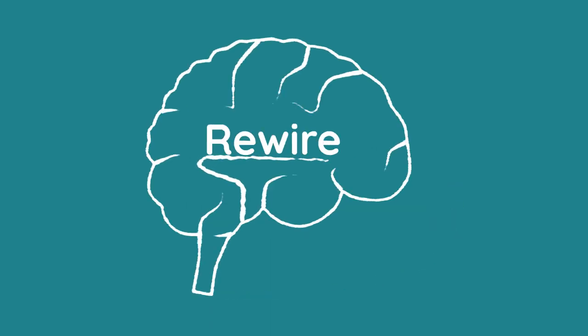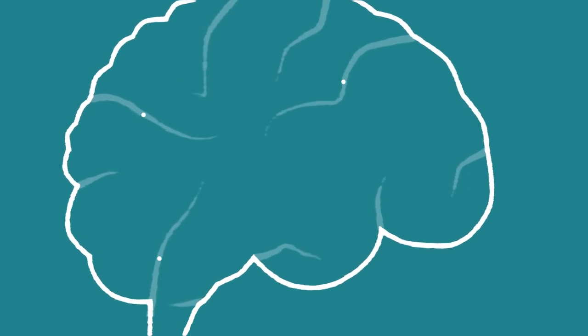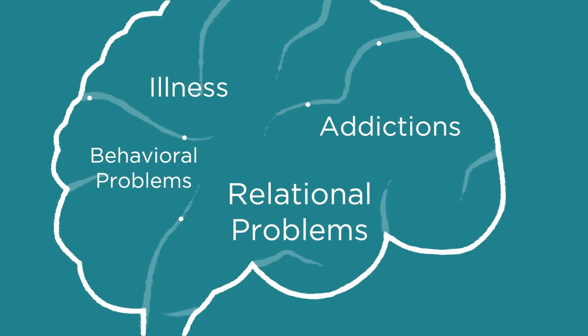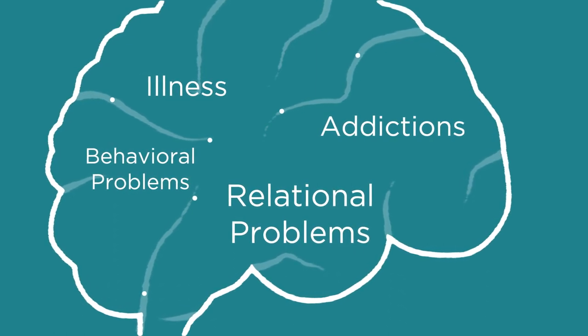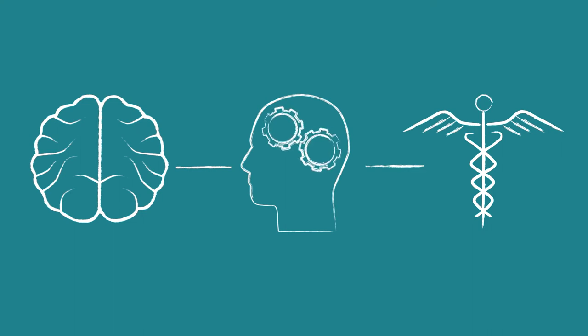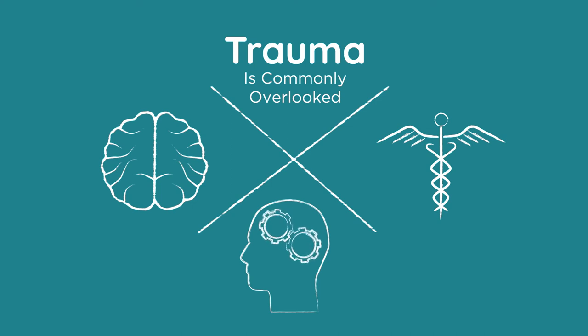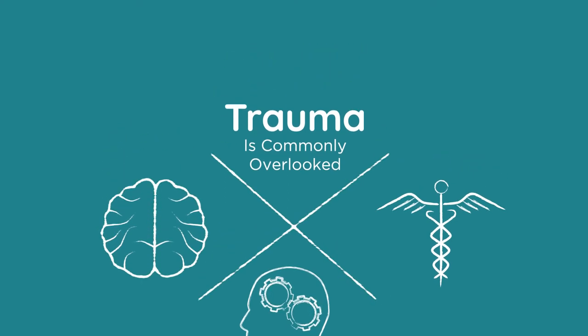Trauma literally rewires the brain, and so it often leaves us with mental or physical illnesses, addictions, behavioral or relational problems, which can worsen and be passed on if left untreated. The trauma, mental health, and medical fields are not integrated, and therefore trauma is commonly overlooked as the root cause of many of the toughest problems our society faces.